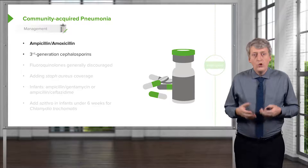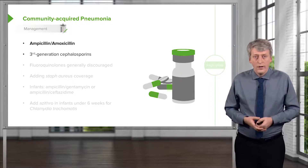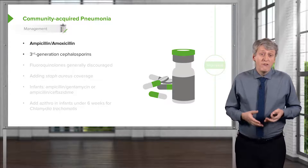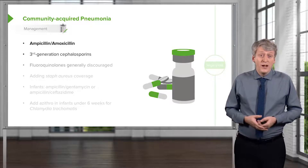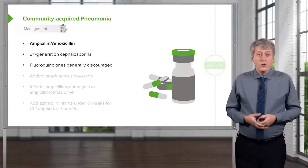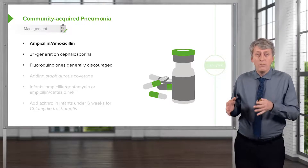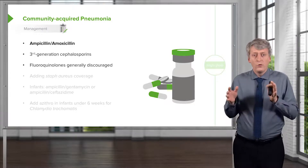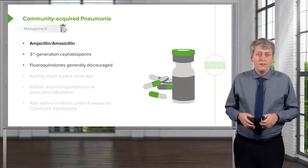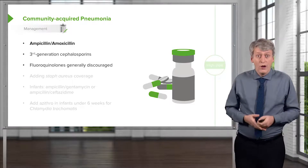If a patient can't tolerate a penicillin, or you're worried about resistance in your community, you would maybe start with a third-generation cephalosporin. Other drugs found to be effective are fluoroquinolones, but we don't encourage those because they have a black box warning. There are a number of side effects of fluoroquinolones we want to avoid, like lifelong peripheral neuropathy.